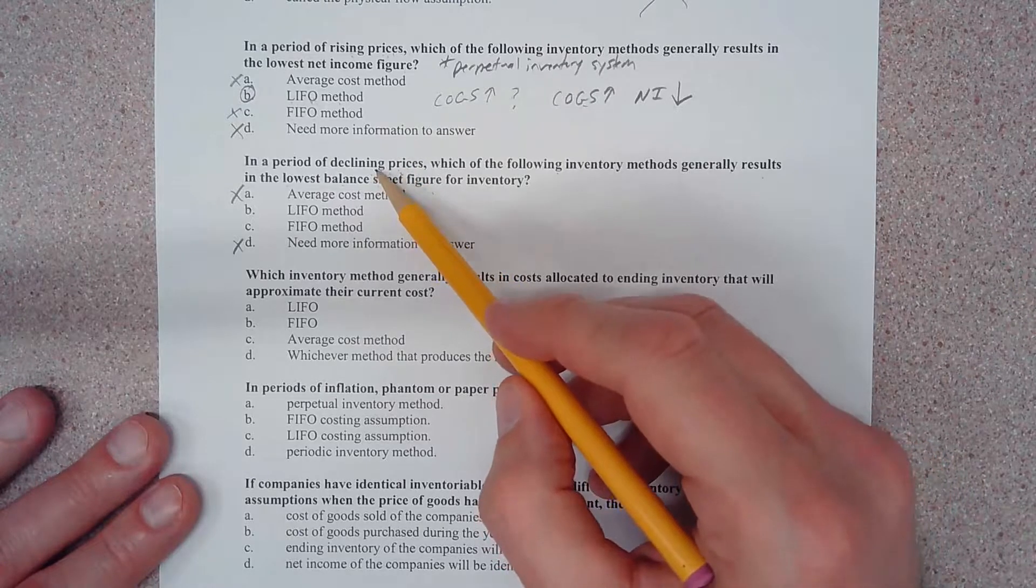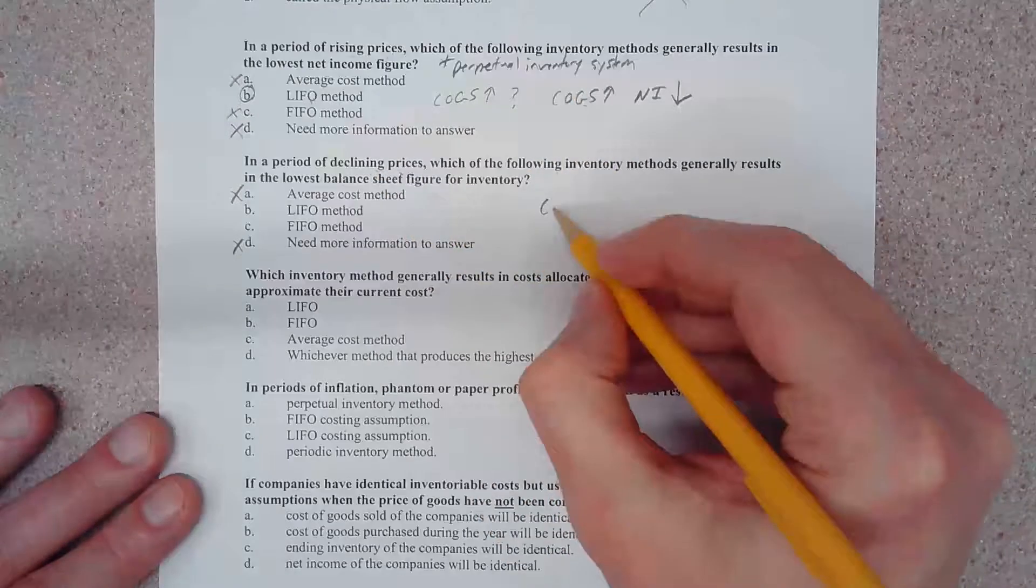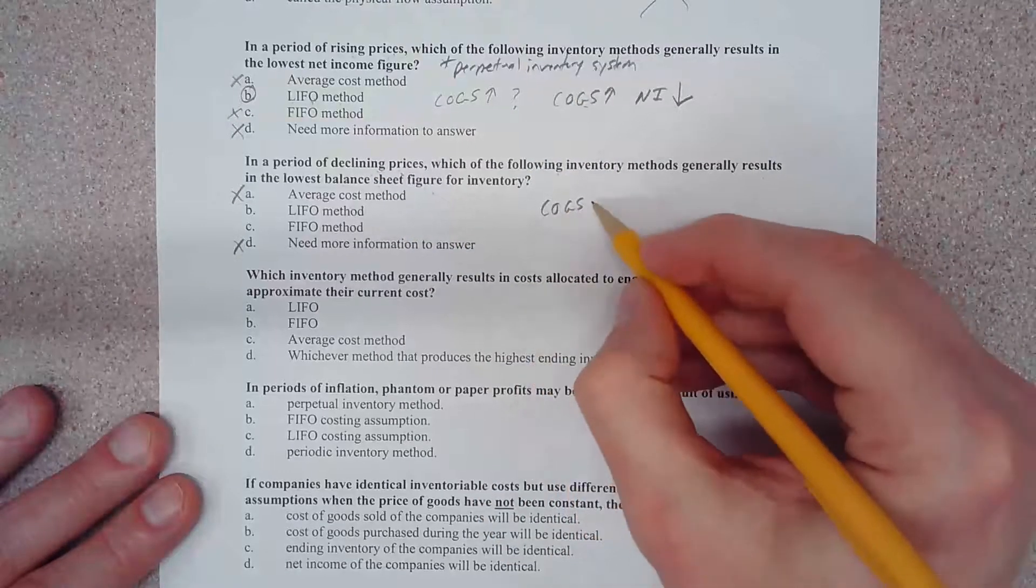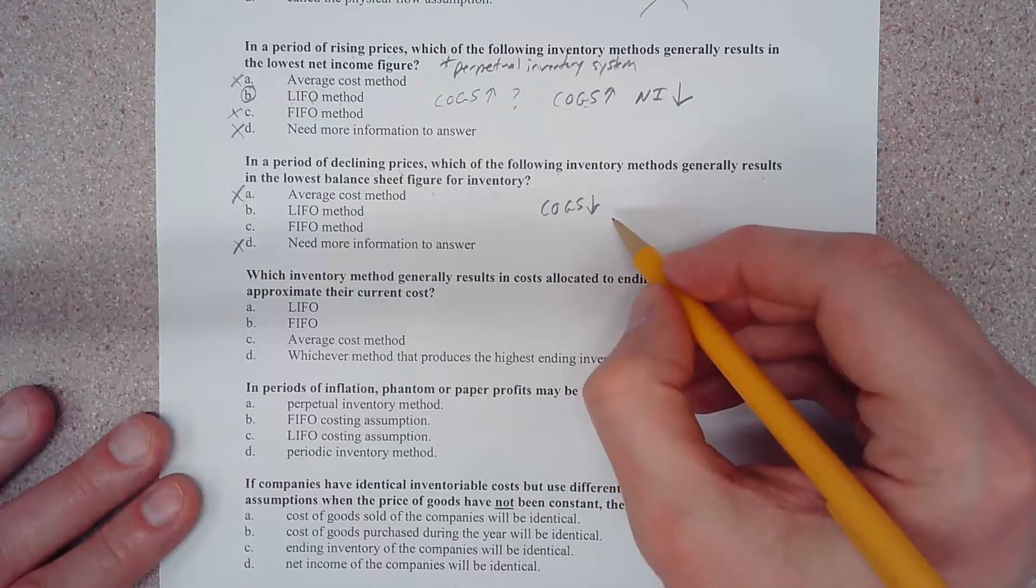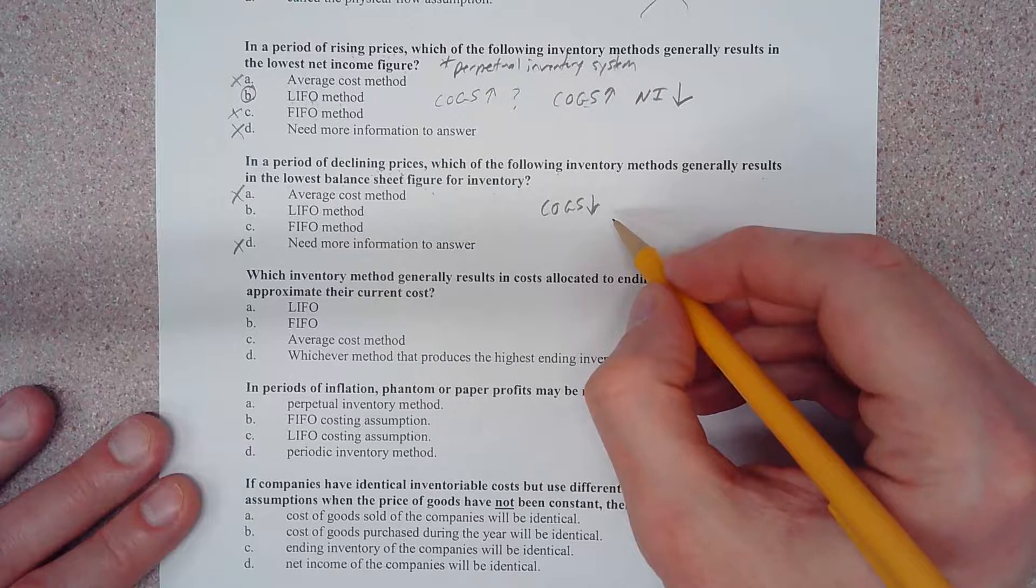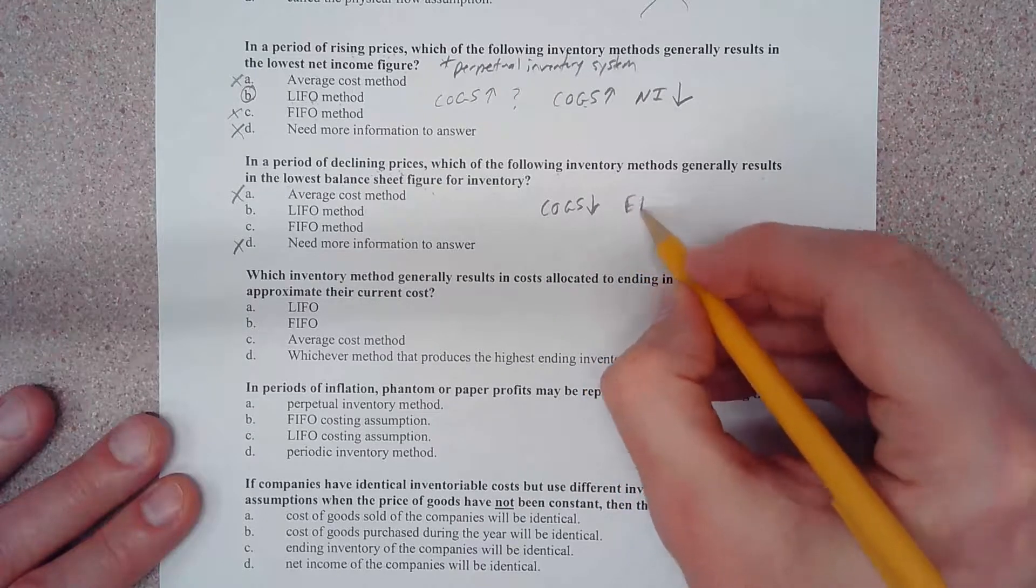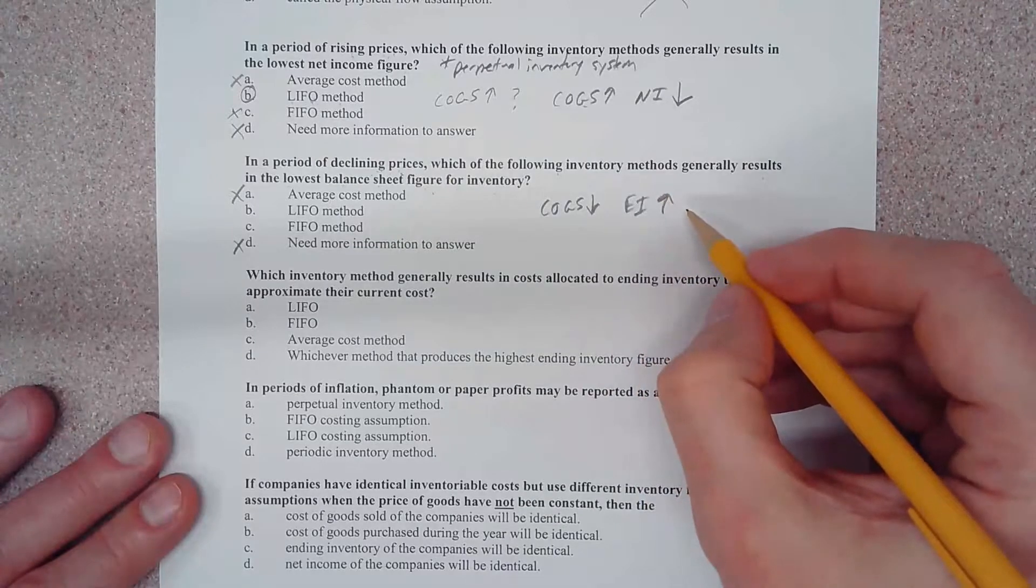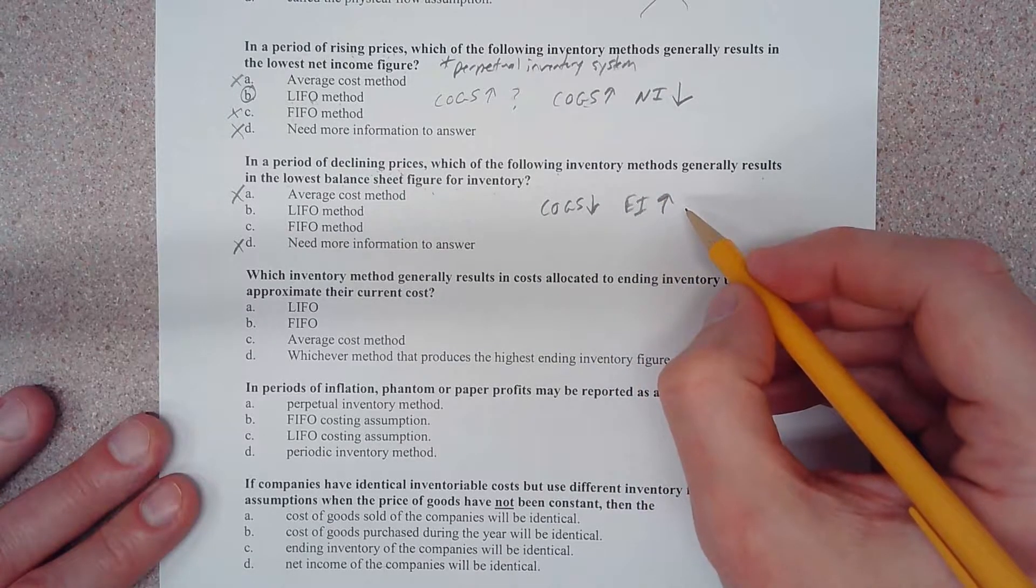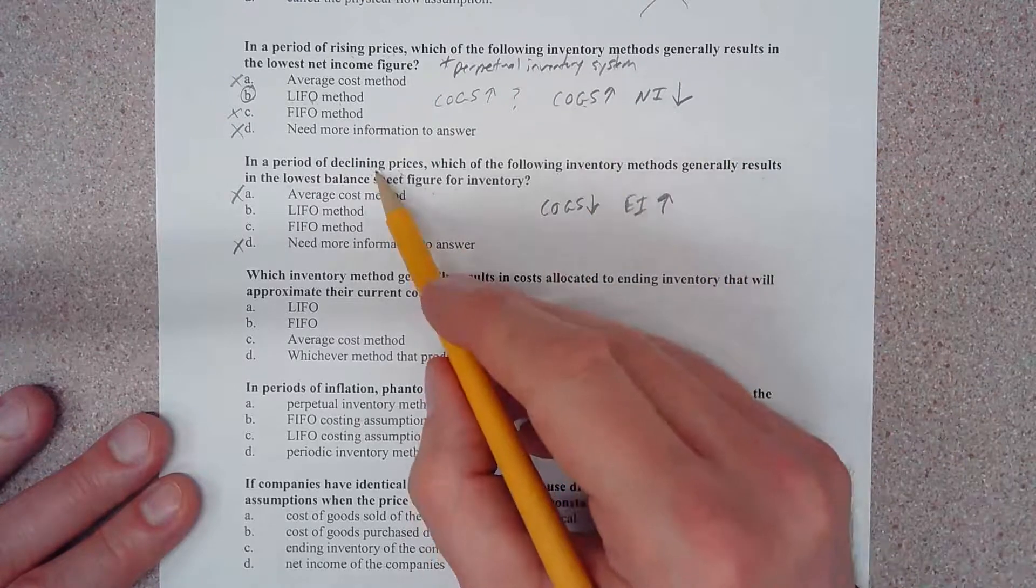If we were to use LIFO, we're going to expense to cost of goods sold not as much because prices are going down. So if we're expensing cost of goods sold low, then our ending inventory is going to be high because our ending inventory is going to be made up of the older, more expensive inventory before the price started to decline.